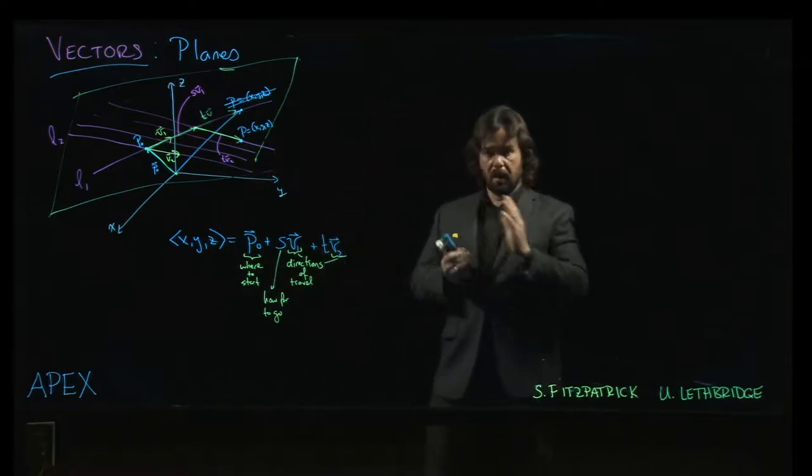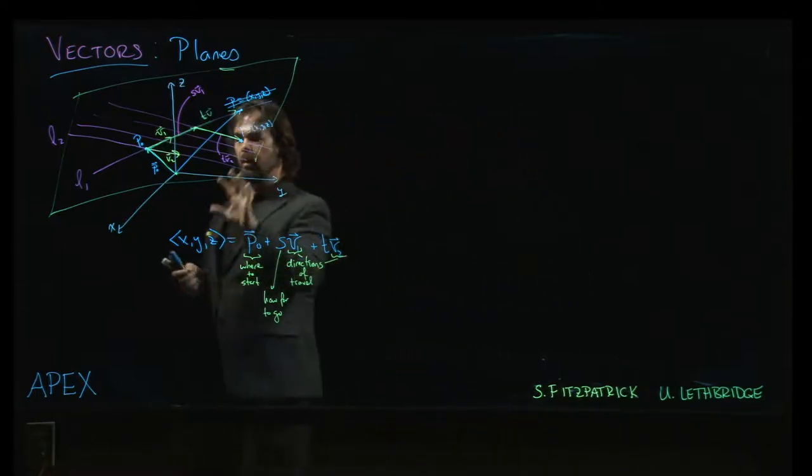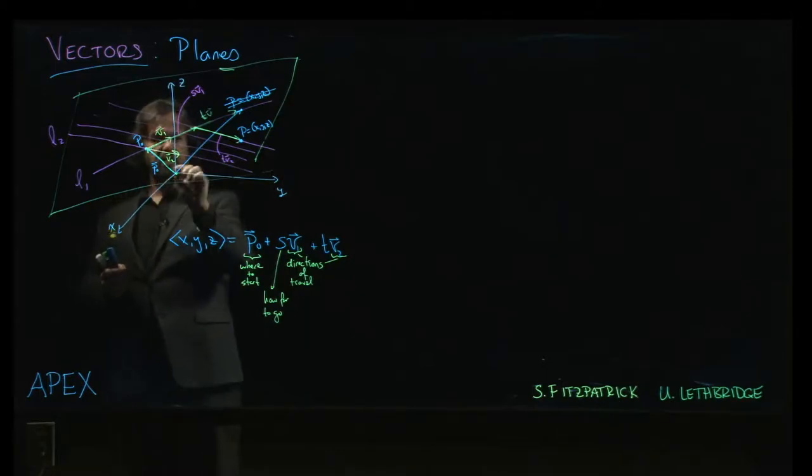So, what we can do is we can take the scenario that we had for lines and we can adjust to something that now gives us a plane. So, we still have a starting point. But, now, what happens is we allow not just one direction of travel. We allow two directions of travel. So, v1 and v2 are the directions of travel.